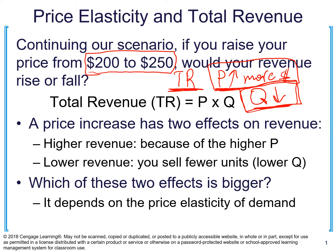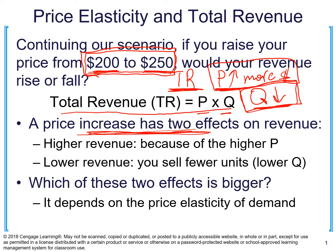In our example, we're going to take our website. Initially you were charging $200 per website and then you decided to increase it to $250. The formula for total revenue is price multiplied by quantity. Our question is: is the effect of the increased price going to prevail, or is the effect of decreased quantity going to prevail — what is going to happen with total revenue?